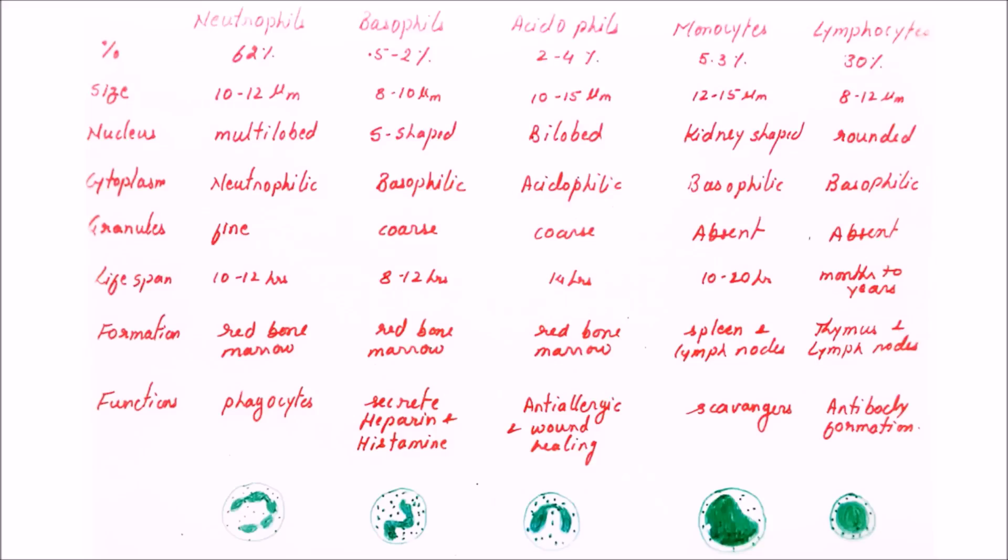Now formation, another point where we want to compare them: neutrophils, basophils, and acidophils—that is, granulocytes—are synthesized in the red bone marrow, whereas the agranulocytes—that is, monocytes and lymphocytes—are mainly produced in lymph nodes as well as some lymphoid tissues like spleen and thymus.